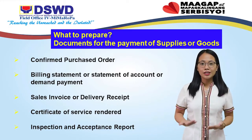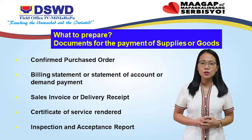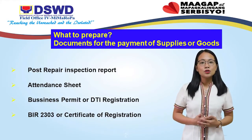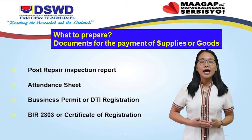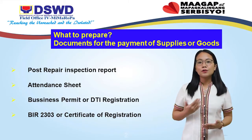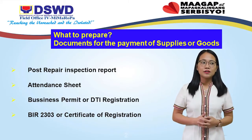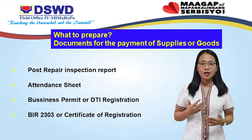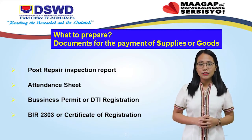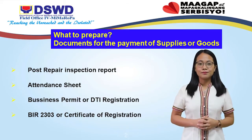Continuing the list: Inspection and Acceptance Report; Post Repair Inspection Report; Attendance Sheet; Business Permit or DPA Registration; and BIR 2303 or Certificate of Registration.